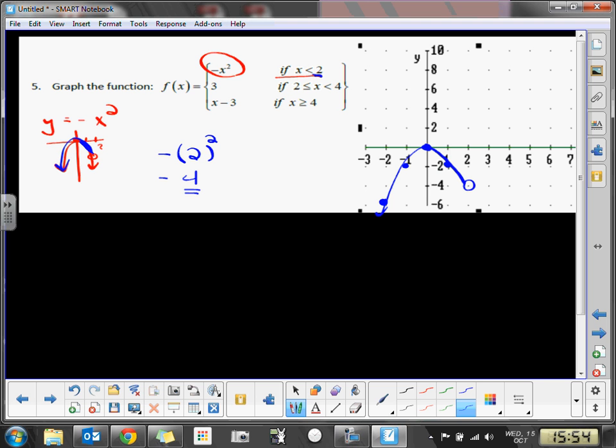So now in the next piece of my graph, what I want to be able to do is graph a constant function, which is nothing more than a horizontal line, from 2 to 4. And the 2 is included.